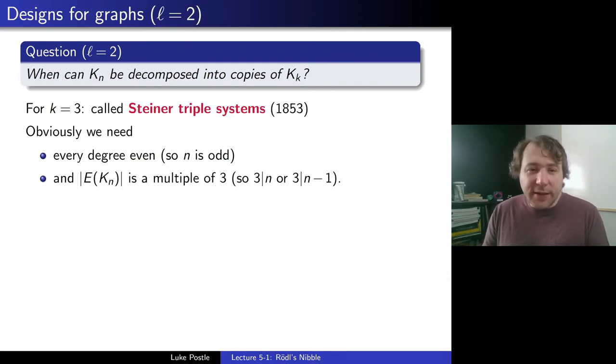Less clear, but also necessary, is that E(K_n) is a multiple of 3. We need the number of edges to be multiples of 3, since each edge is in one triangle and there are three edges in each triangle. And that would give rise to a divisibility condition, namely that 3 would have to divide n or n-1.